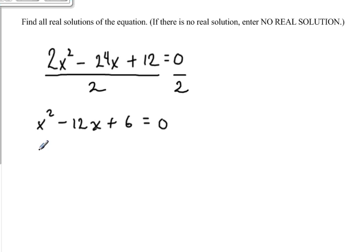Now, the next thing we'd like to do is try to factor the equation because that would be the easiest way to solve the problem. So what we need are two factors of the number 6 that add up to negative 12. Now, if you go through the factors of 6,